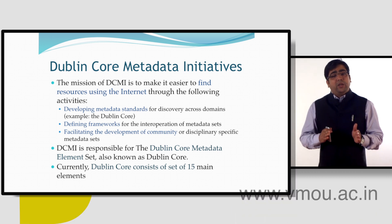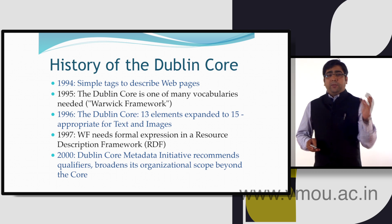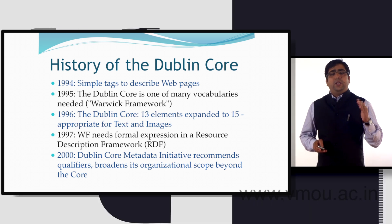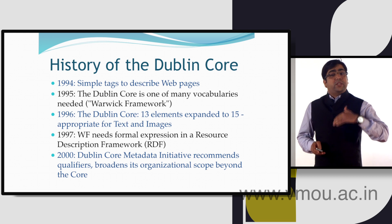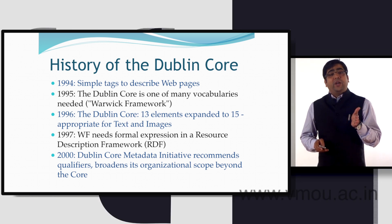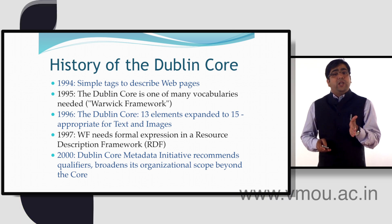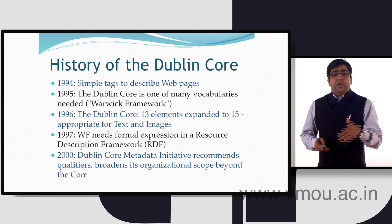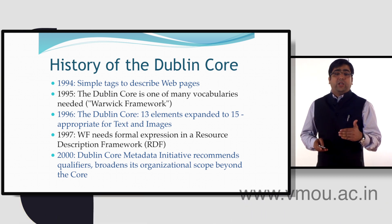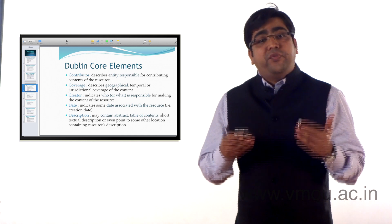Currently there are 15 core elements of Dublin Core. Dublin Core basically started in 1994 as a simple tag to describe web pages. Later it gained much popularity in 1996, and the Dublin Core Element expanded its scope to 15 elements. In 2000, the Dublin Core Metadata Initiative recommended qualifiers which broadened its organizational scope beyond the core elements. Basically, Dublin Core consists of 15 elements.